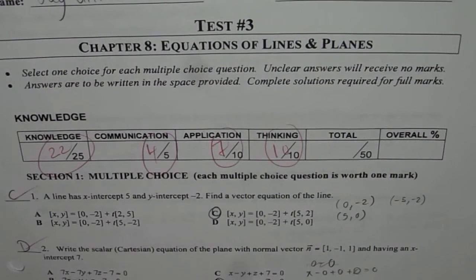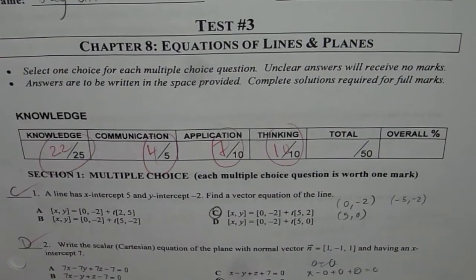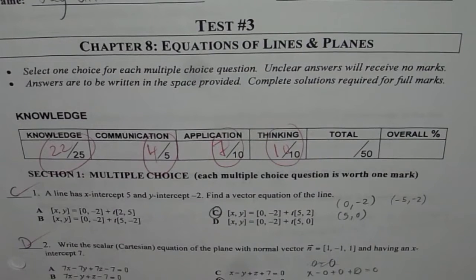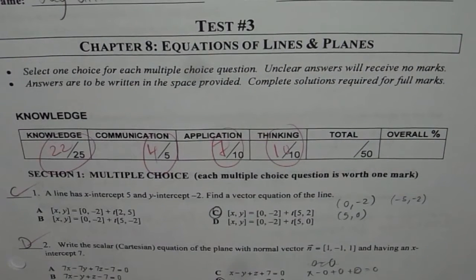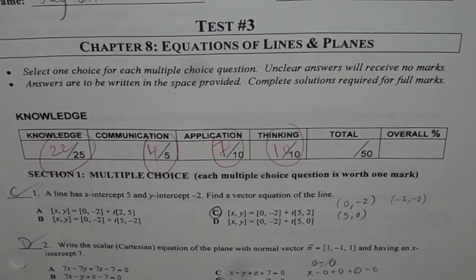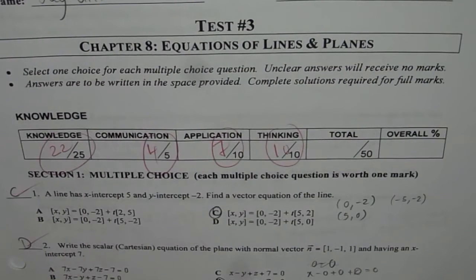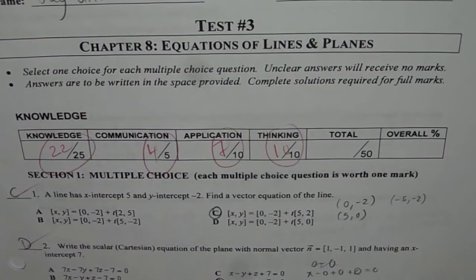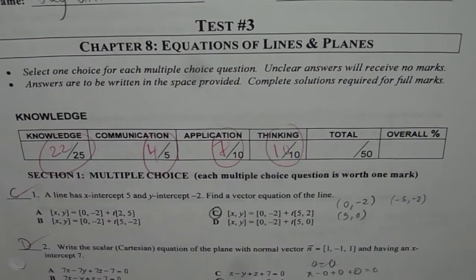Let me go through them one by one. The first question here is: a line has x-intercept 5, y-intercept of minus 2. Find a vector equation of the line. Four choices are given to you. Thanks to my student who has got all of them right. So you can check your answer with the answers given here in the test paper.